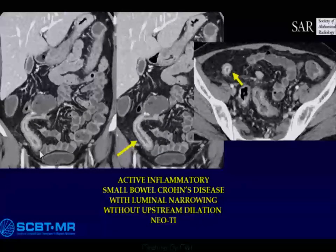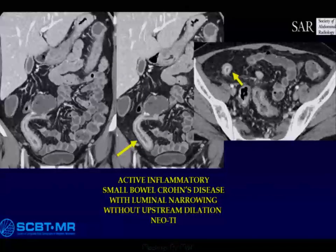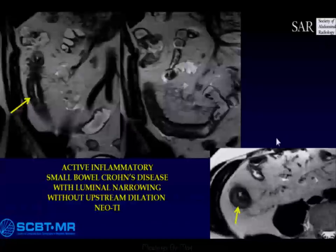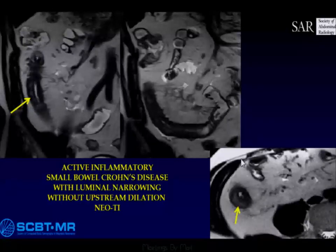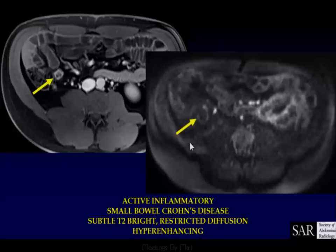Here's an example of the stratified hyperenhancement pattern. I don't use the word mucosal because most of the time the mucosa is gone, so it's just stratified — we don't really know what this is other than a lot of active inflammation. Wall thickening, we can see distended vasa recta. Here's the MR: T2 bright, wall thickening, no luminal dilation upstream but luminal narrowing at the site of active disease. And here's fat-saturated T2 increased signal, the hyperenhancement, and restricted diffusion.